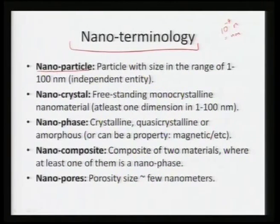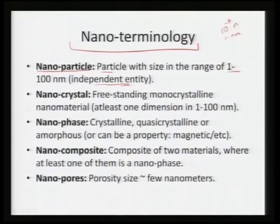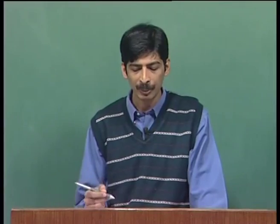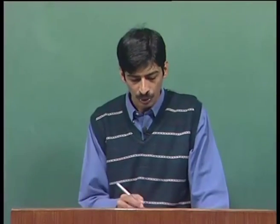There are certain entities we need to learn about, such as the nanoparticle. A nanoparticle is a particle with a size in the range of 1 to 100 nanometers that can act as an independent entity. It can always agglomerate and form much bigger units, but the individual entity — capable of existing on its own — is called a nanoparticle.